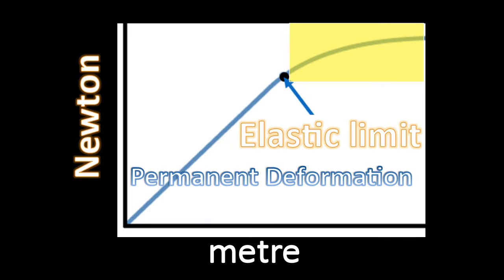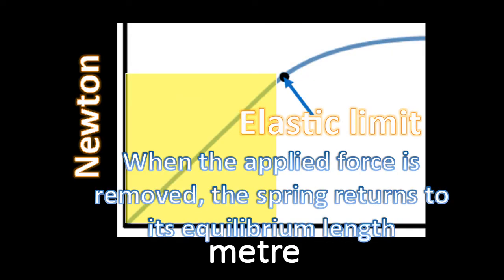When this happens, we often use the term permanent deformation. For this part of the graph, when the force or the extension is below the elastic limit, then, when the applied force is removed, if it's a spring, it will return to its equilibrium length.